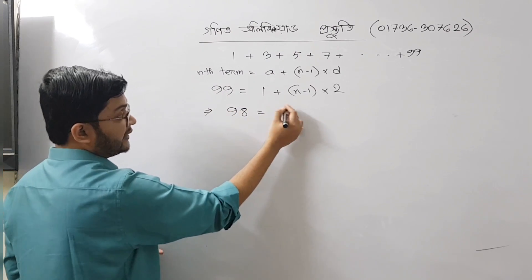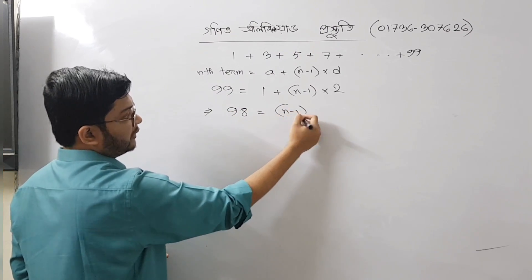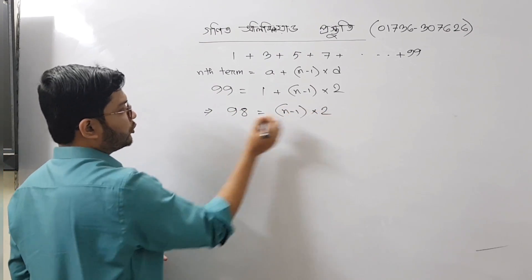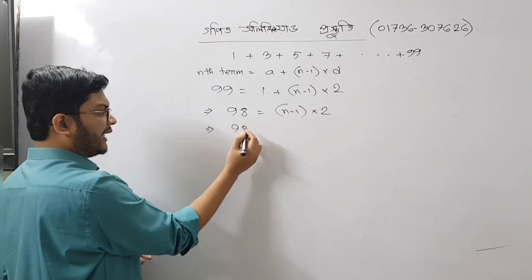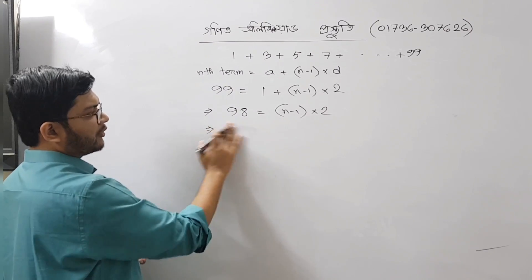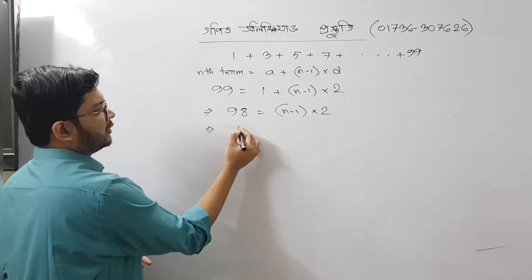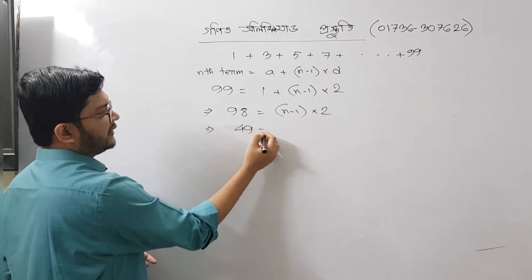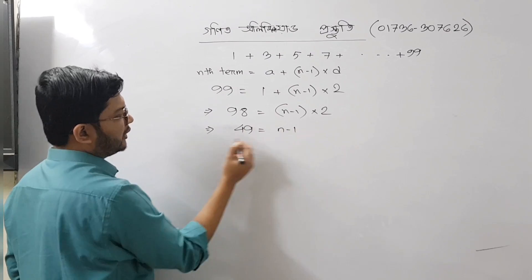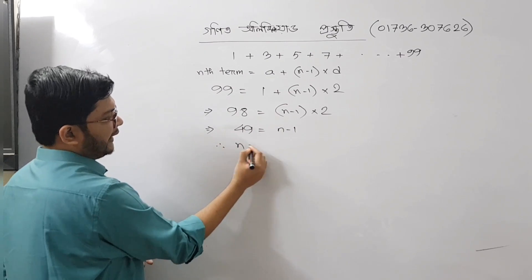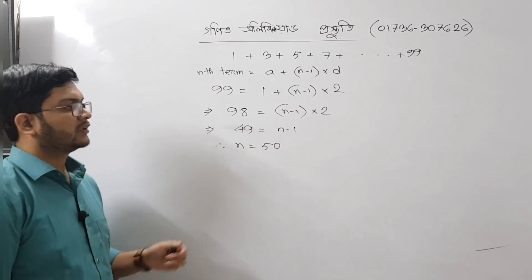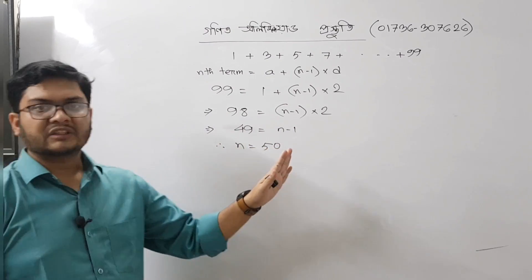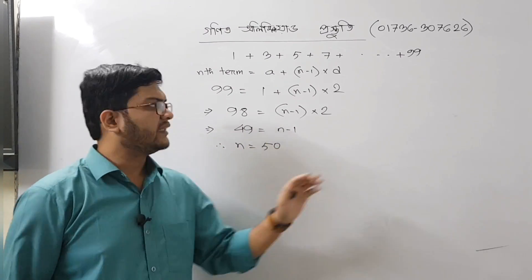98 is equal to n minus 1 times 2. So 98 divided by 2 is equal to n minus 1. Therefore, 49 is equal to n minus 1, which gives n is equal to 50. So our first part is already done.